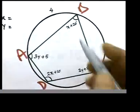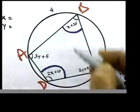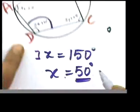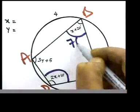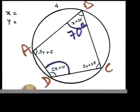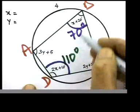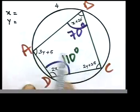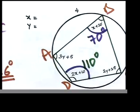Now go back to the drawing. x plus 20: putting x equals 50 gives 70. Since opposite angles add up to 180, the other angle must be 110. Do the same for the other pair — angles A and C — to find y, then fill in those two blanks.